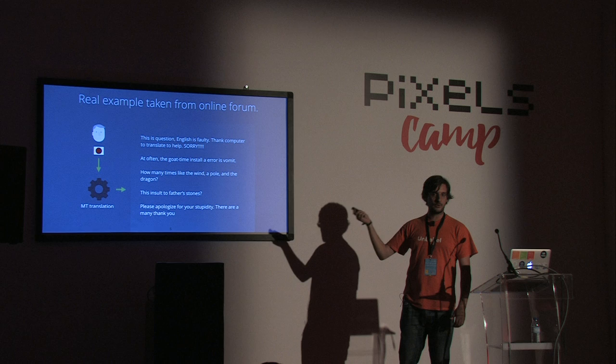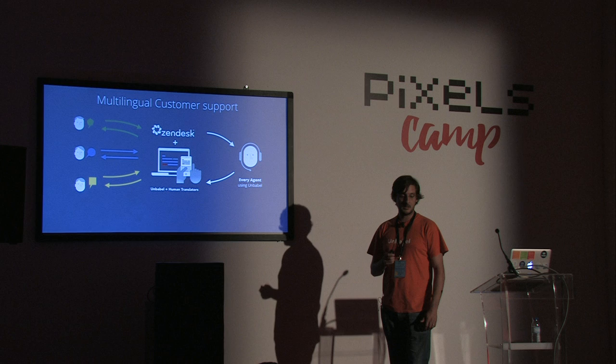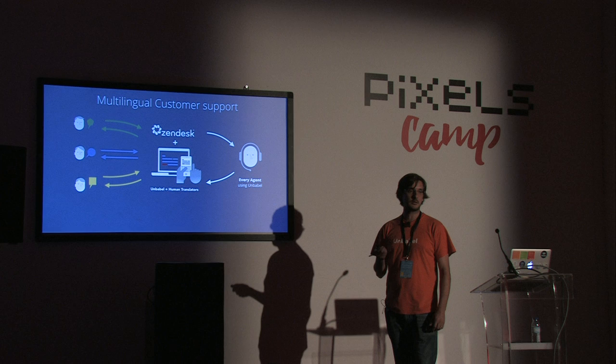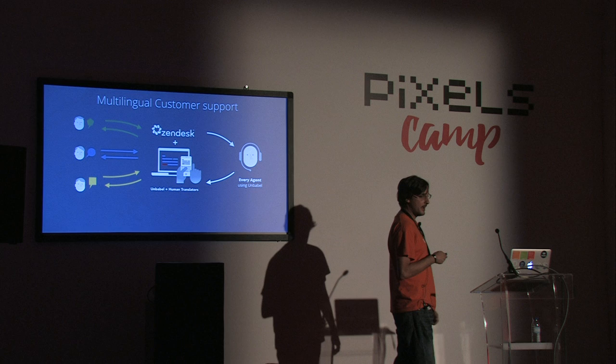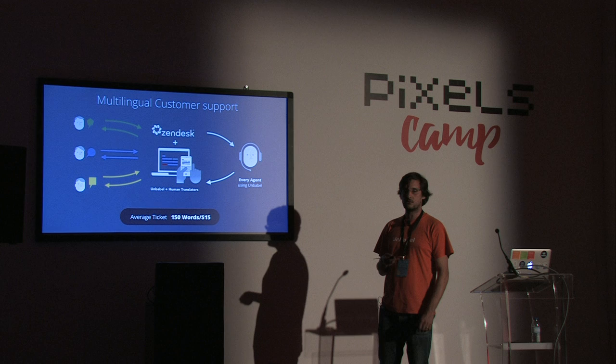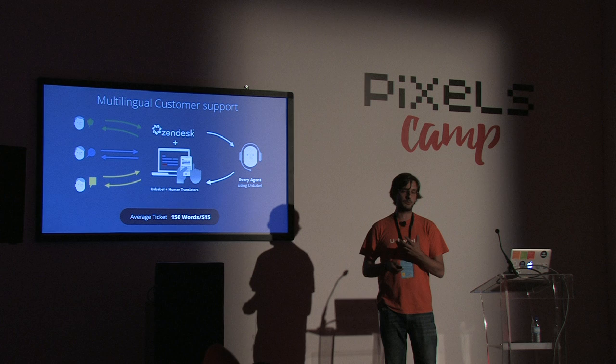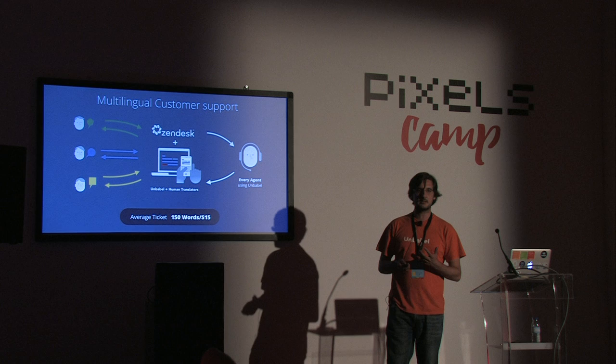Another example is customer support. If you're doing business on the web and you have customers from all over the world, you're bound to get emails in different languages. Right now, what happens is you either have an agent that knows how to speak the language, or you basically can't reply in that language. Given the current price per word, one single email of 150 words will cost around $50. Although you do want to talk in the customer's language, the content is not valuable enough to pay that price. The other problem is that regular translation agencies are super slow, and you don't want to add this time on top of your customer support time.